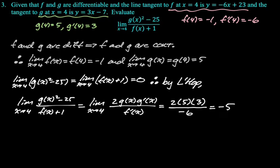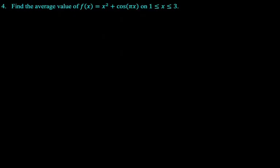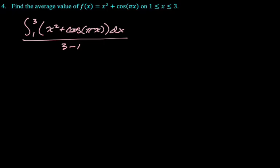All right, let's look at one more. Find the average value of f of x equals x squared plus cosine of pi x on the interval from 1 to 3. All right, so average value is integral divided by interval. So I'm going to write that down. Integral from 1 to 3 of our function over 3 minus 1.